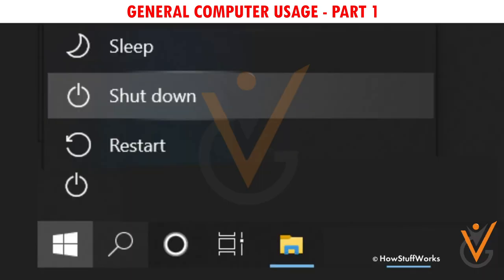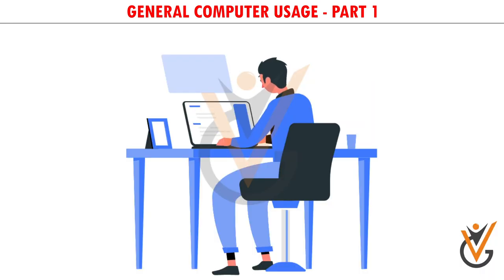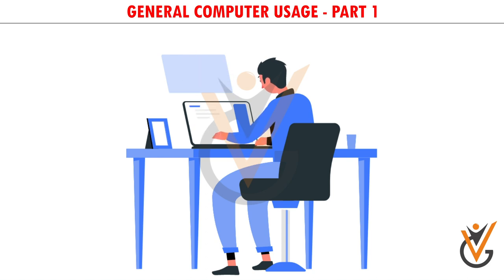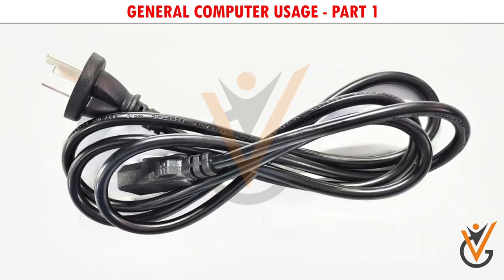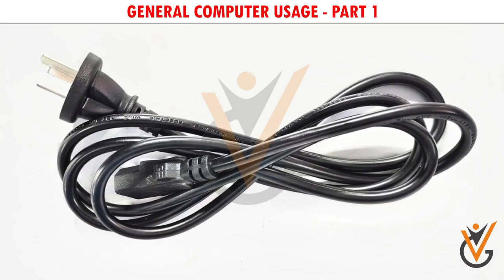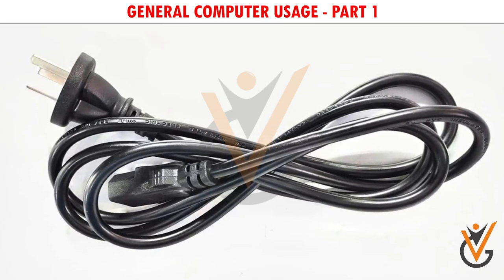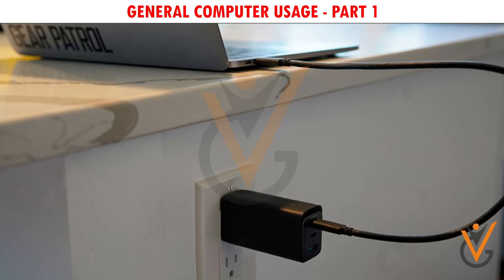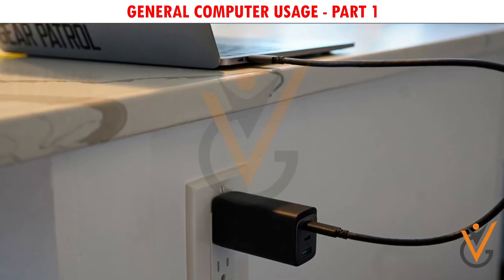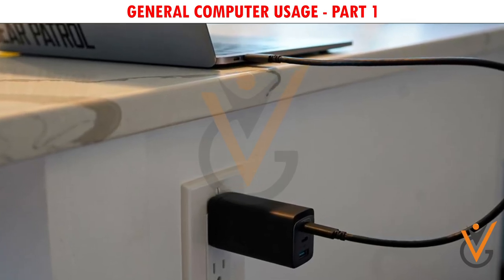Some buttons are universal, like the power button. Depending on the type of computer you have, it may be on the front, on the back, behind the screen, or even on the inside when you open the lid. The power socket is where you'll connect the power cord. If you have a laptop, you'll have a charging port instead.